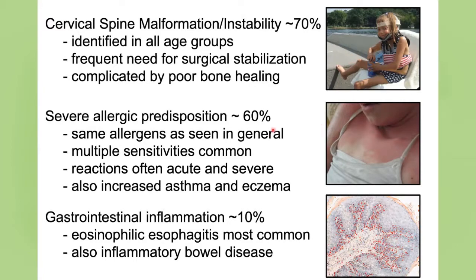About 60% of these patients have a strong allergic tendency, generally to the same types of allergens as seen in the general population — nuts, shellfish, and common environmental sensitivities. Reactions can be very sudden and severe, and many of our patients require use of an EpiPen. There is also an increased incidence of asthma and eczema. About 10% of the people we care for with this condition have a significant form of gastrointestinal inflammation. Infiltration of eosinophils in the esophagus — so-called eosinophilic esophagitis — is most common, and at the most severe end of the spectrum, we see what appears to be classic inflammatory bowel disease.